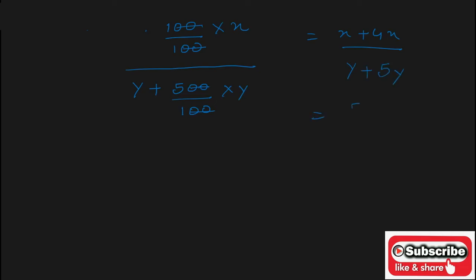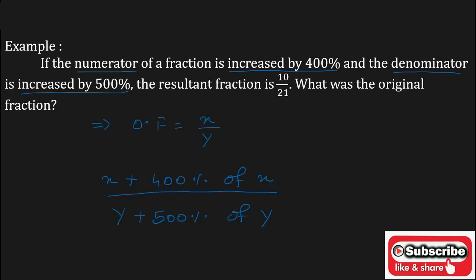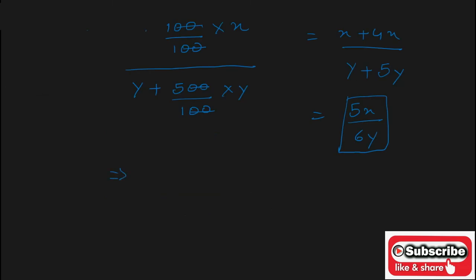This is the fraction when the numerator is increased by 400 percent and the denominator is increased by 500 percent. And in the question, the resultant fraction is 10 upon 21. So 5x upon 6y is equal to 10 upon 21.